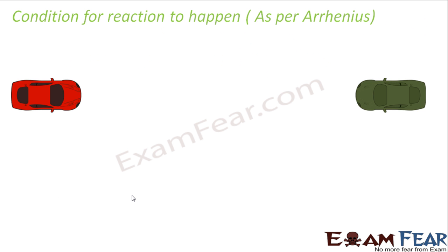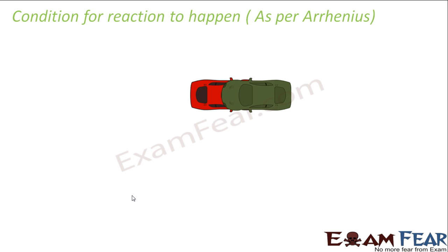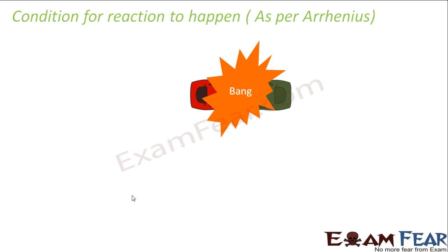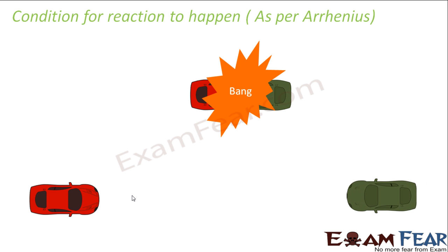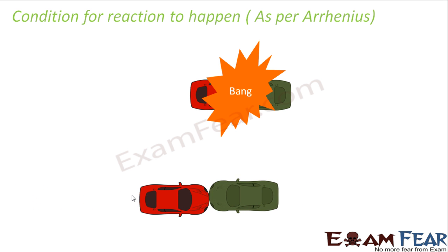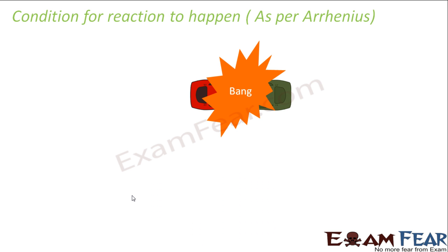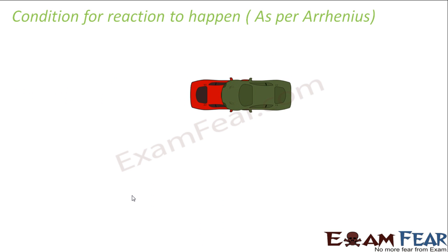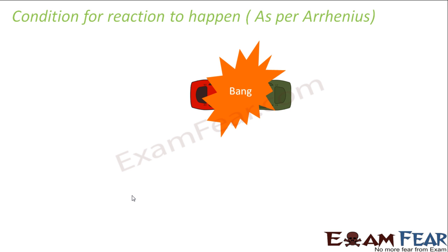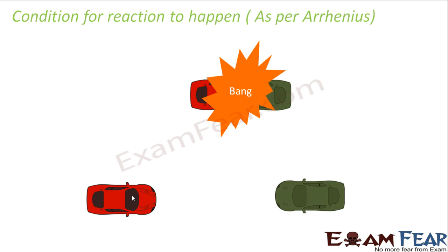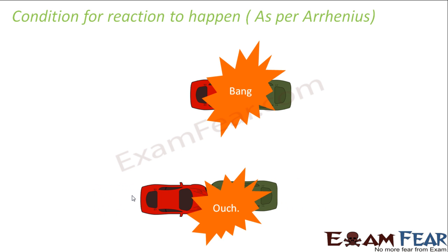As per Arrhenius, for a reaction to happen the collision has to be there and it has to be strong enough to produce a reaction. If two cars are going in a slow direction they will not produce a huge bang and the product will not be formed. There has to be a huge bang — two cars coming at high speed, there is a bang, the collision happens and the product is formed. So the molecules should have activation energy to react.